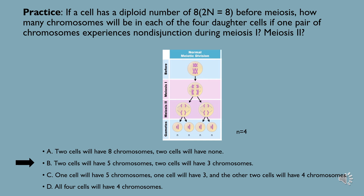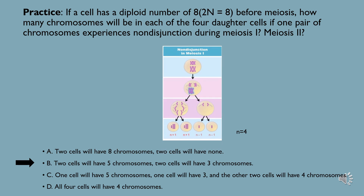However, in this scenario we are told nondisjunction occurred in meiosis I. Nondisjunctions in meiosis I are caused by the failure of homologous chromosome pairs to separate, resulting in abnormal chromosomal inheritance in all four daughter cells. Specifically, nondisjunctions in meiosis I result in two daughter cells with an additional chromosome and two with one missing chromosome. Since we know that the haploid number is 4, answer B is the correct choice, as n+1 equals 5 and n-1 equals 3.